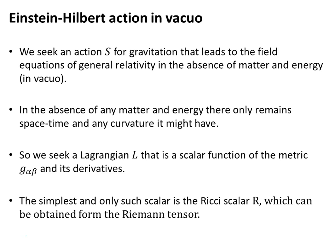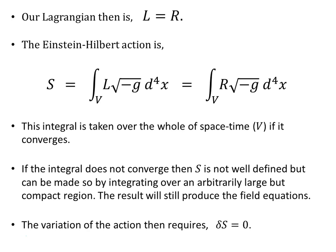In the absence of any matter and energy, we only have space-time and any curvature that it might possess. So we need a Lagrangian that is a scalar function of the metric and its derivatives. The simplest such scalar — and the only one it turns out — is the Ricci scalar, which we can obtain from the Riemann tensor. So our Lagrangian L will be the Ricci scalar R, and the action is the integral over the four-dimensional space-time of the Lagrangian times the metric determinant, which is just the integral of the Ricci scalar times the metric determinant.